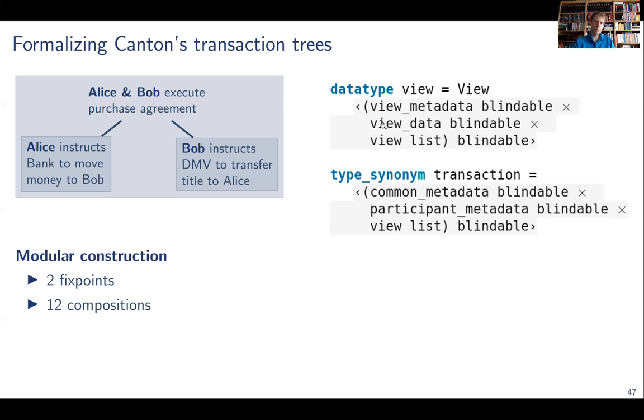Now, if we do the modular construction for those, we end up with two fixed points. One is obvious, the data type view does recursion here. The other is hidden because there is the list data type through which the recursion goes. And that's yet another data type. And that shows the compositionality of the approach. Then other than that, there's just 12 compositions that we need to apply. And essentially the proofs are copy paste and they could be easily automated. But it gives us a very systematic way to handle such complicated data structures in a very systematic fashion. And we get the right properties that we want.